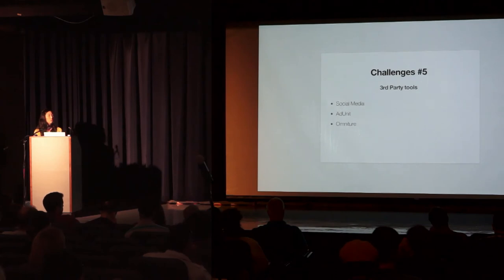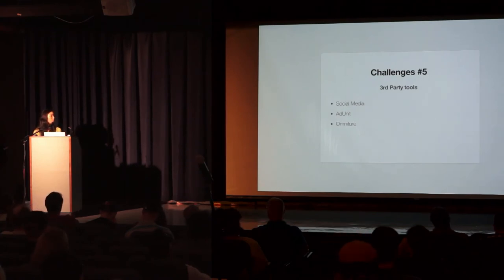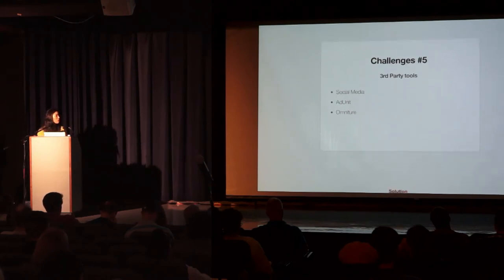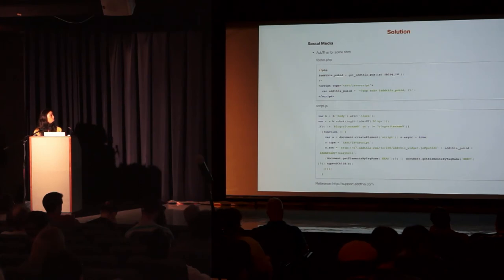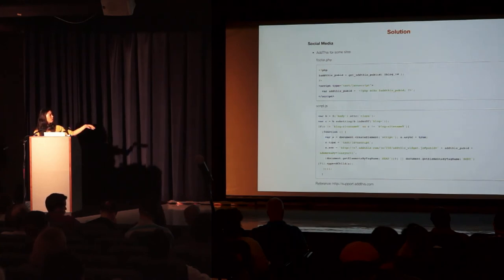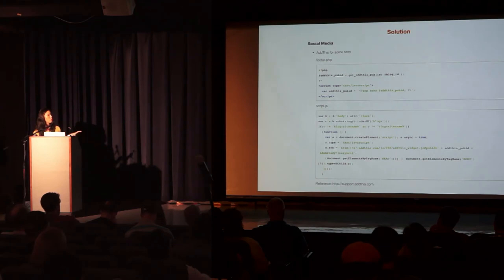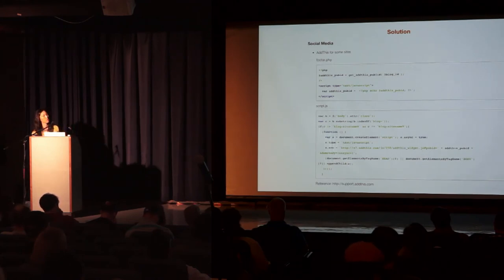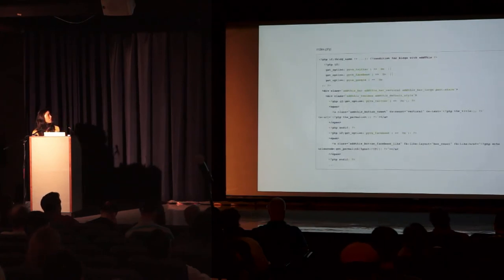Challenge number five was third-party tools. For social media, some blogs wanted to use AddThis, while others just wanted regular social media buttons. AddThis and AdUnit each required handling different script inclusions and variable assignments, and Omniture as well. For blogs using AddThis, we have functions to get the AddThis public ID — a unique identifier — assign it in a script, and in script.js include the AddThis library only for blogs using it via an if statement checking whether the body class includes that site name.